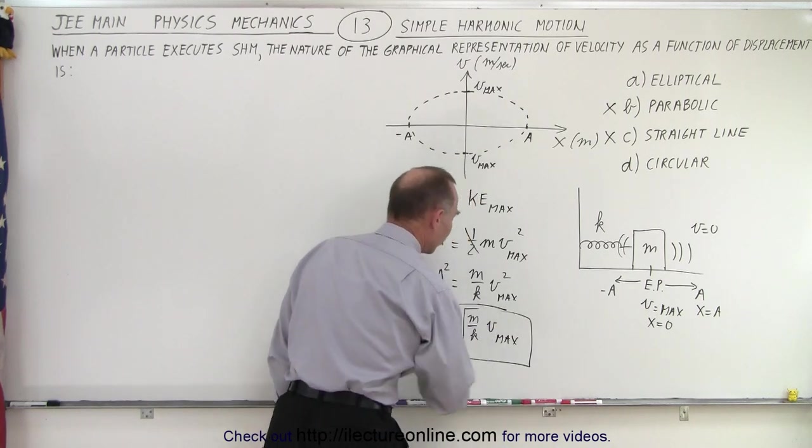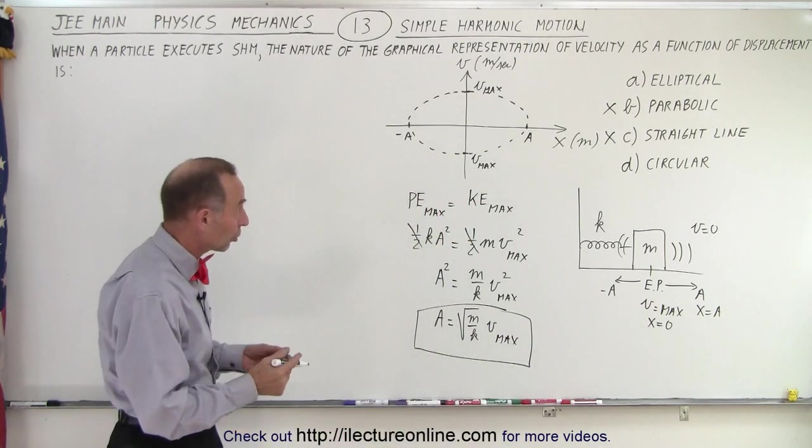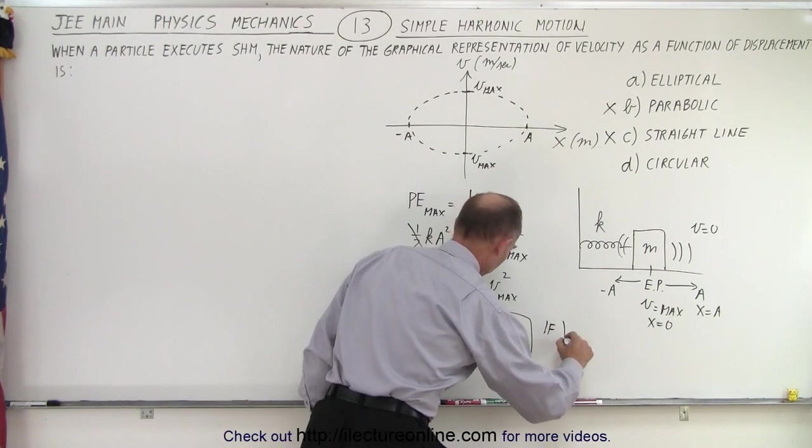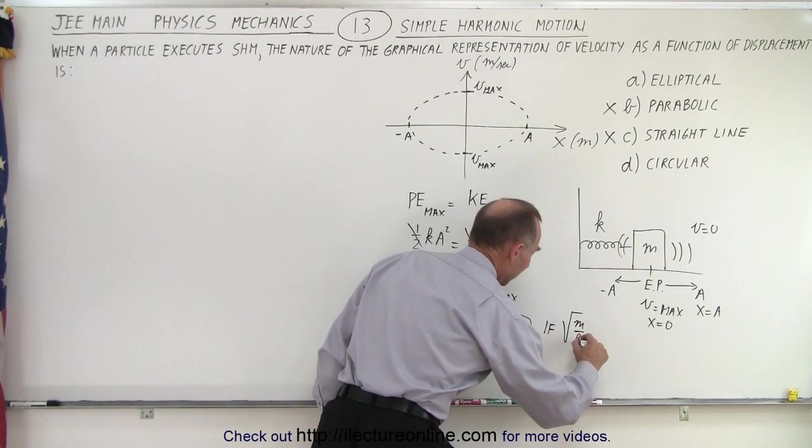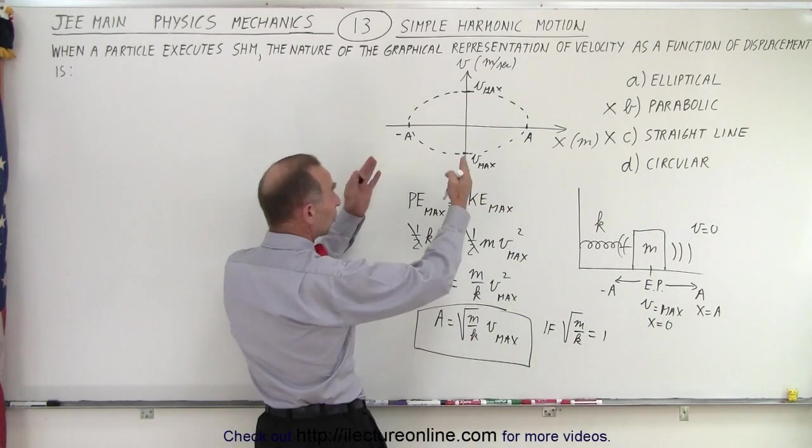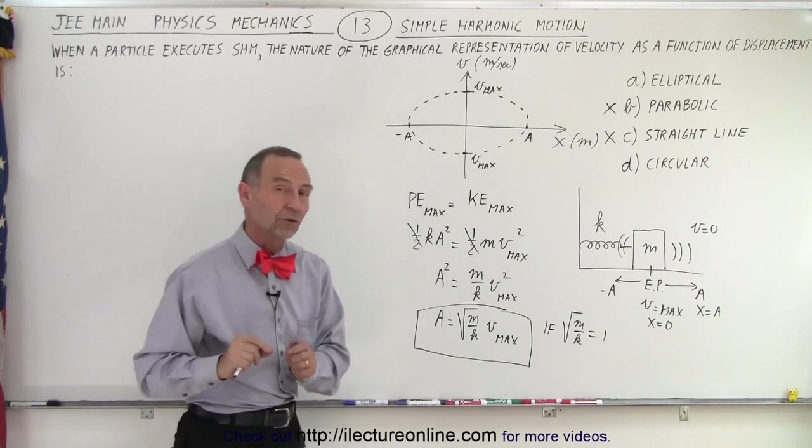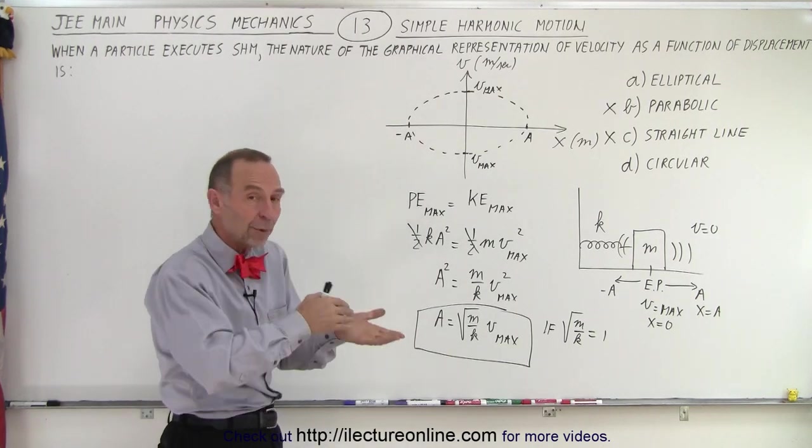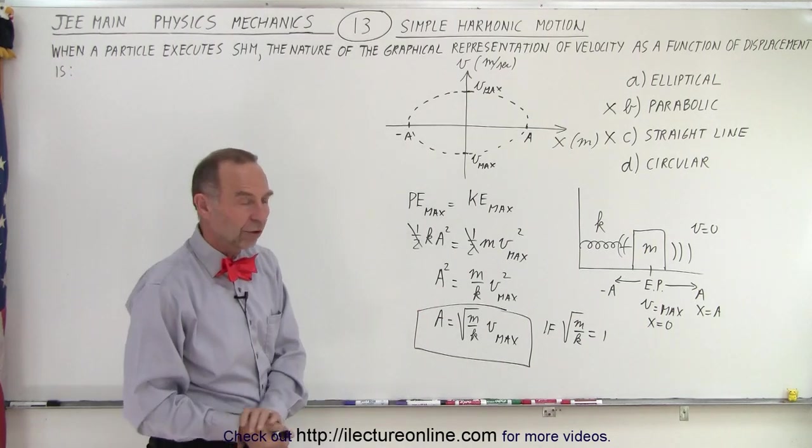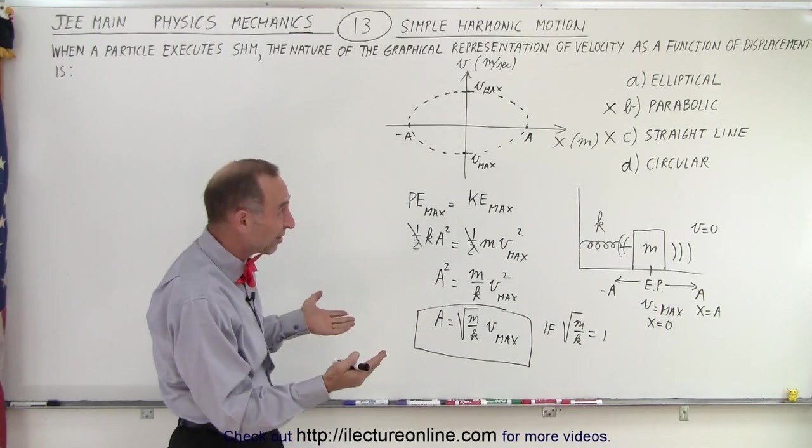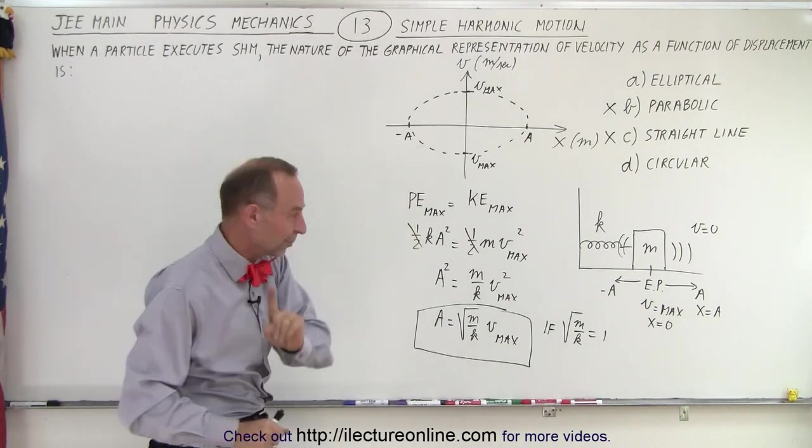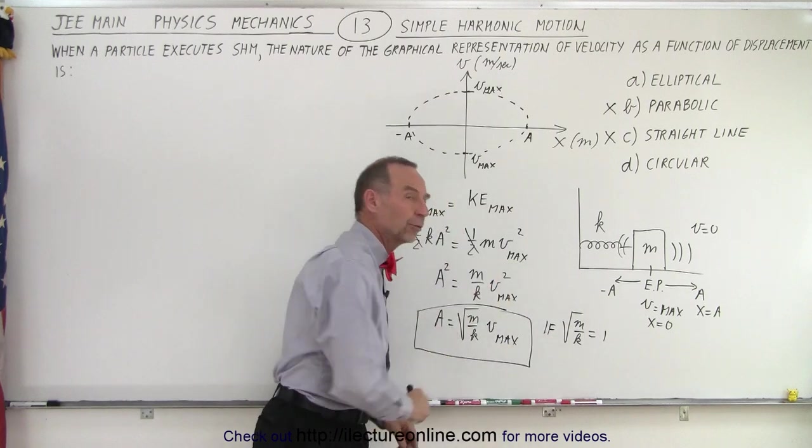Notice that this would represent a circle on our graph if the square root of m over k, if that's equal to one. Then at that point a equals V max and you would have a circle. But only under those circumstances. For all other ratios of m over k not being equal to one, you would end up with an ellipse. So from that perspective I would say ellipse is the right answer, because you would have that in all circumstances except for one circumstance where this equals one.